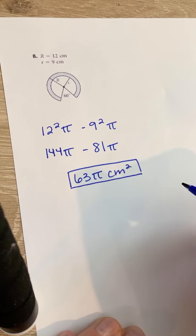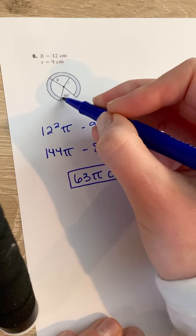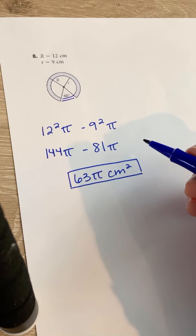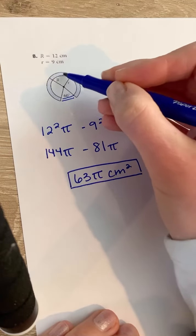That's the total area, but then they want you to exclude this chunk here. The 60% they want it to go away, so you want to find the area of what's left.